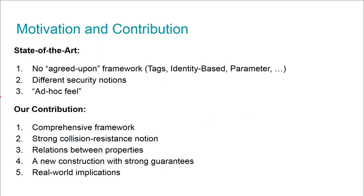However, if you take a look at all the papers around, there seems to be no agreed upon framework. Some use tags, some use identity-based encryption, some are in the public coin setting, some in the secret coin setting, some use parameter generation, some don't. This also means the security notions differ quite a lot. I guess the reason is that chameleon hashes are very tailored for specific applications.